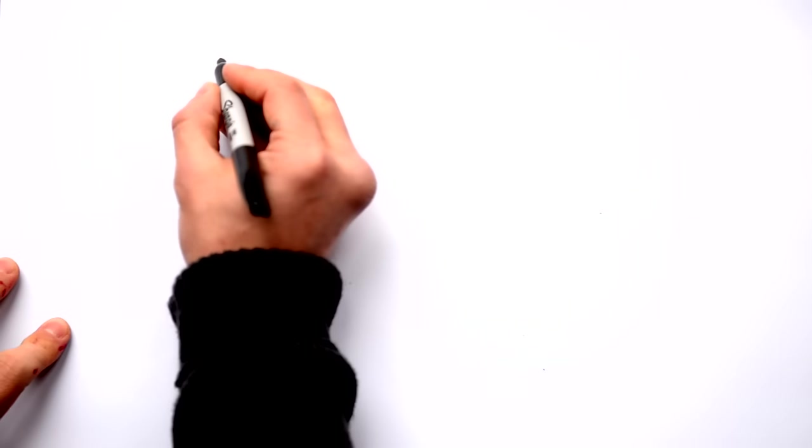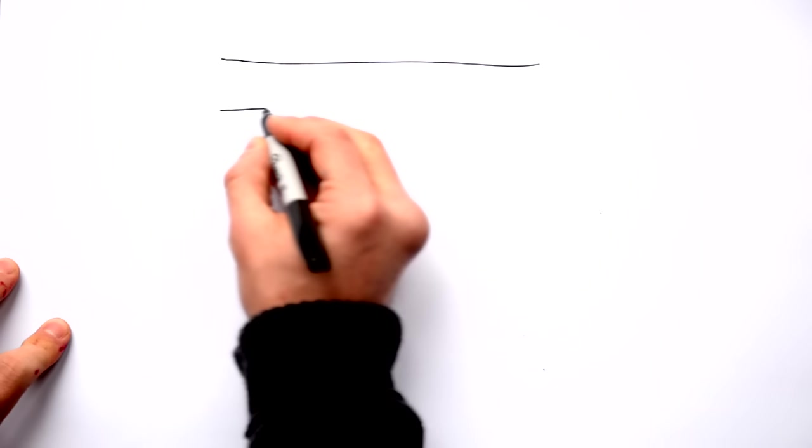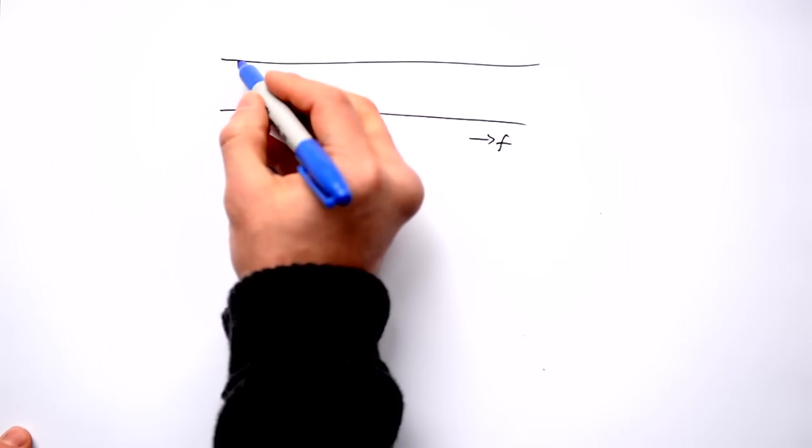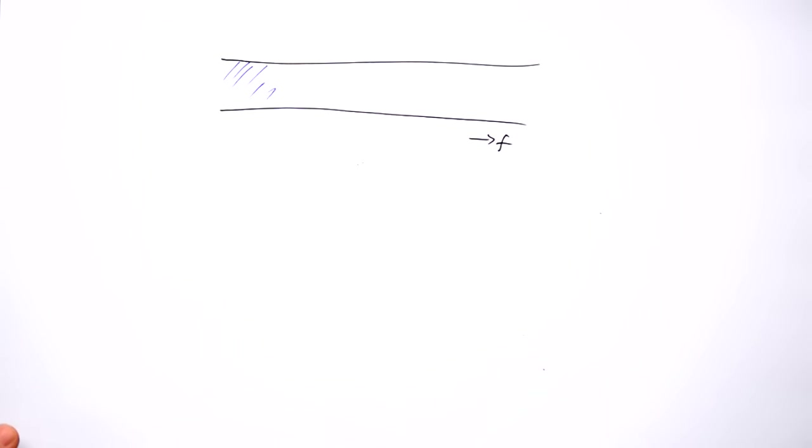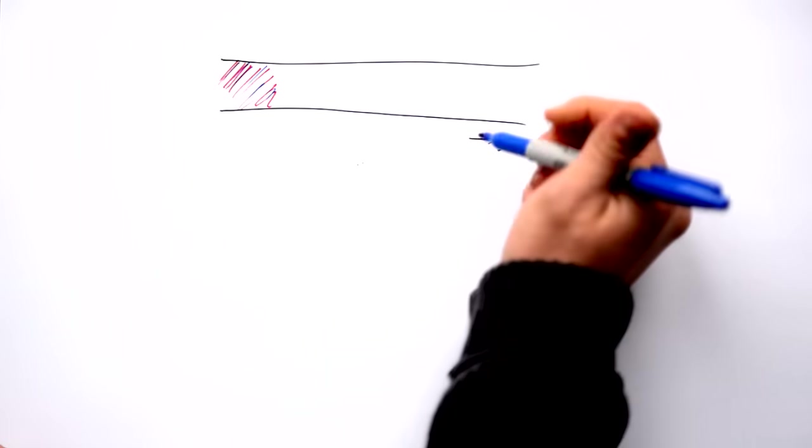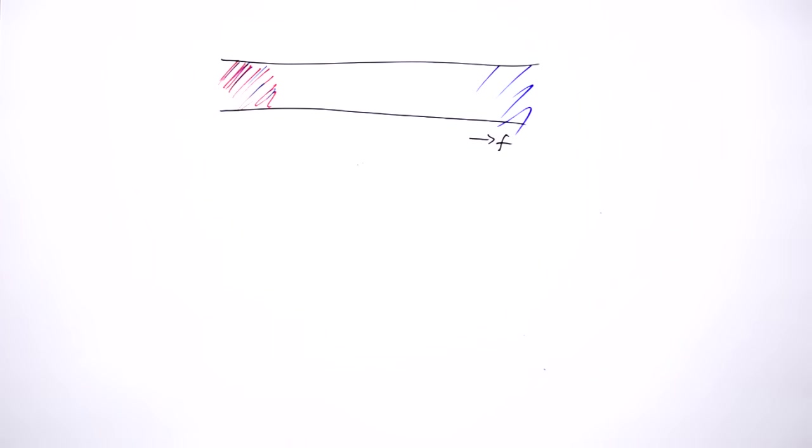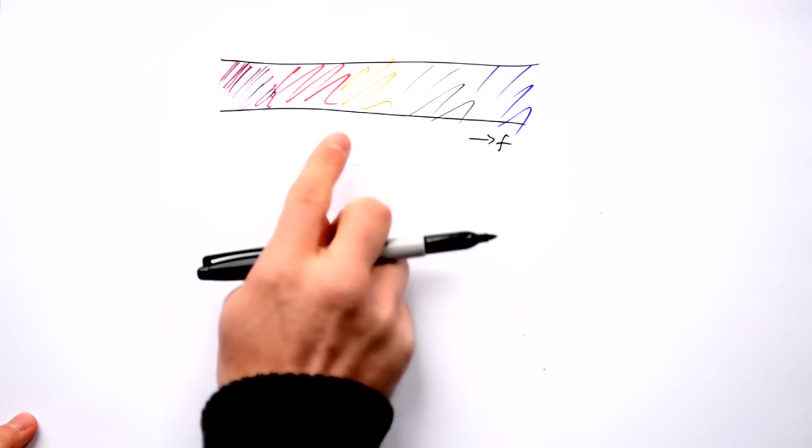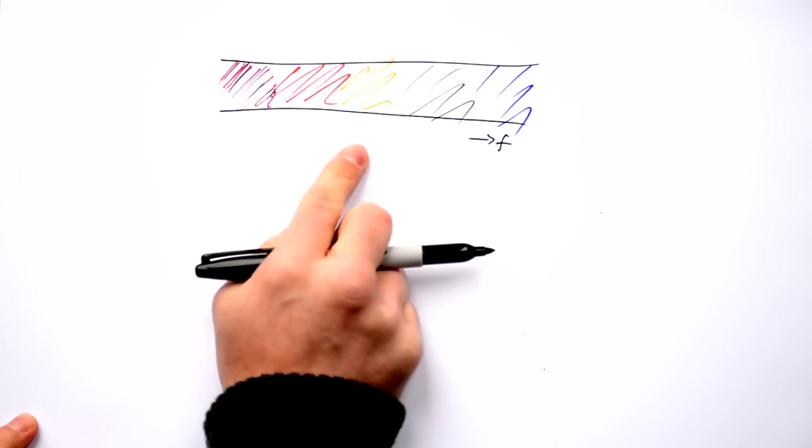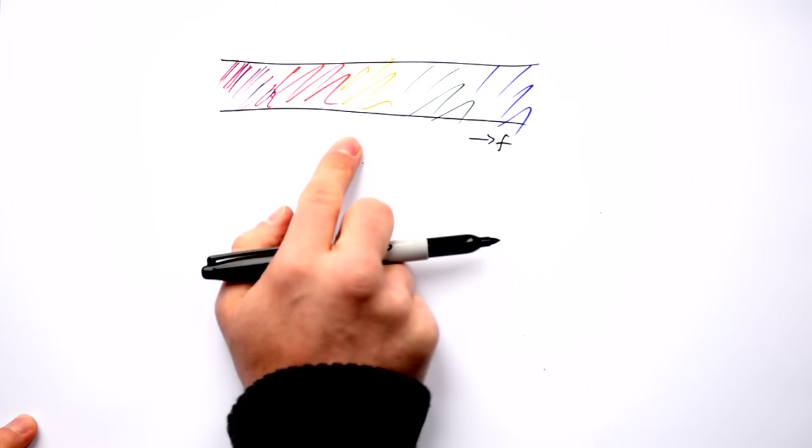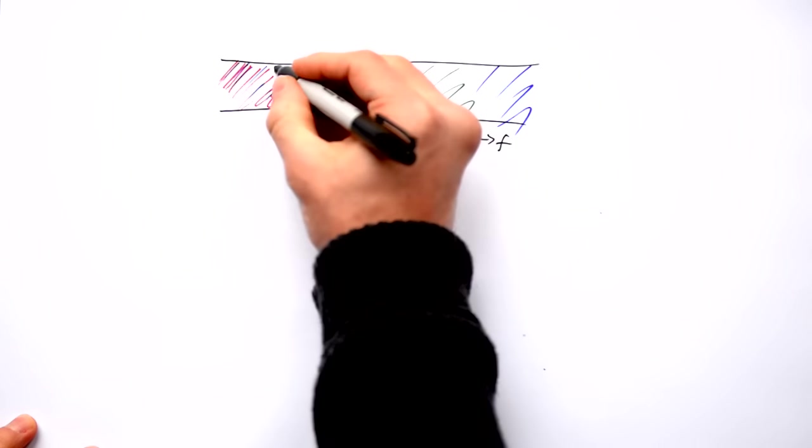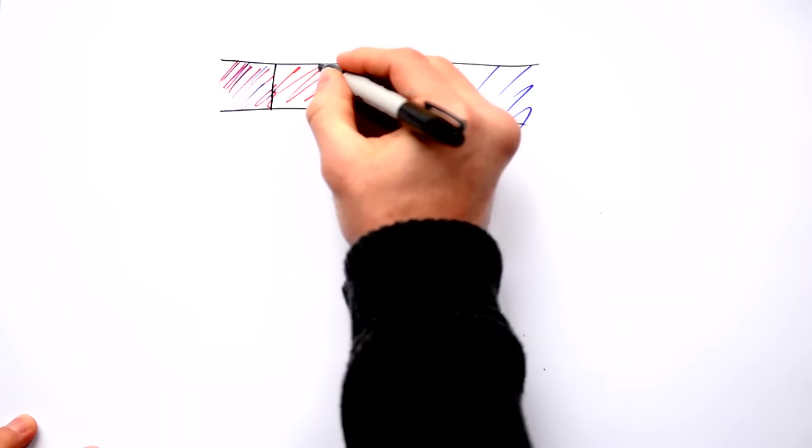So that does mean that atoms only absorb certain wavelengths of light. So you might see a diagram like this and you'll see all the colors in the rainbow going from red all the way to blue. And because we know that electrons can only absorb certain wavelengths and certain frequencies of photons, we get these black lines appearing on here.